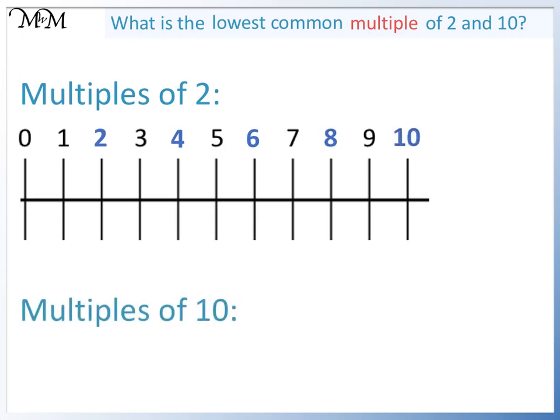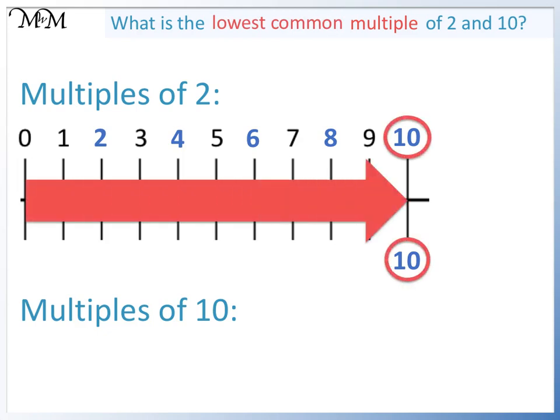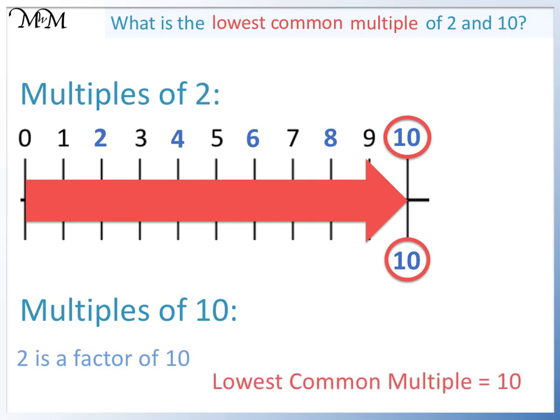The first multiple of 10 is 10. And we can see that we have a number in common, which is 10. 2 is a factor of 10. And if this is the case, the lowest common multiple is the larger of the two numbers, which is 10.